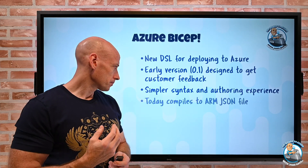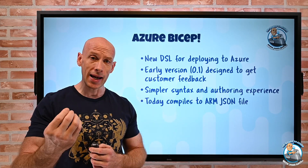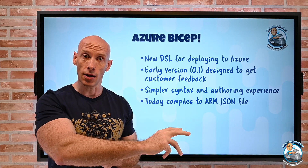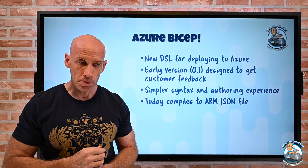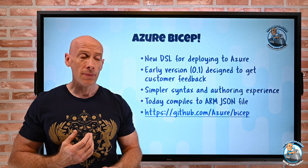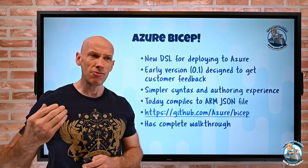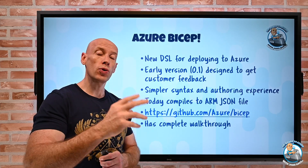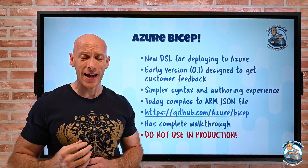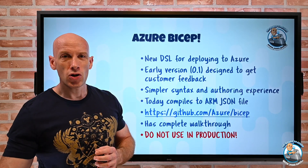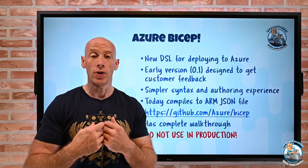It's a simpler syntax and a simpler authoring solution. Today it basically compiles to JSON — JSON is the intermediary language it compiles to. So I don't deploy Bicep straight to Azure; I compile the Bicep file to an ARM template, then deploy the ARM template to Azure. It gives a simpler authoring experience. It's out there on GitHub with a complete walkthrough covering all key components. Anything I can do in ARM is shown through Bicep as well. Do not use it in production — this is strictly to go and see what's coming as a new way to author. It's still using ARM underneath.